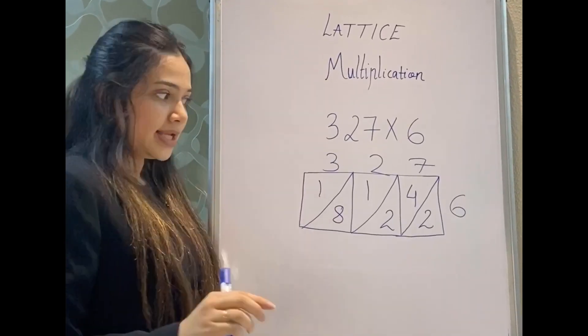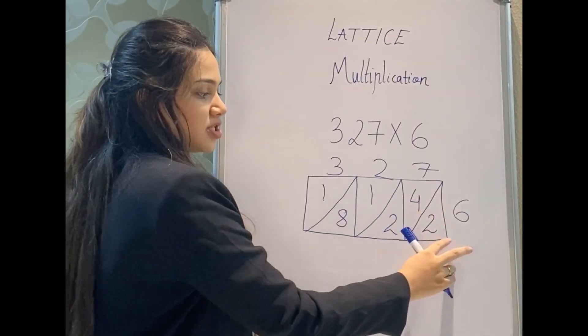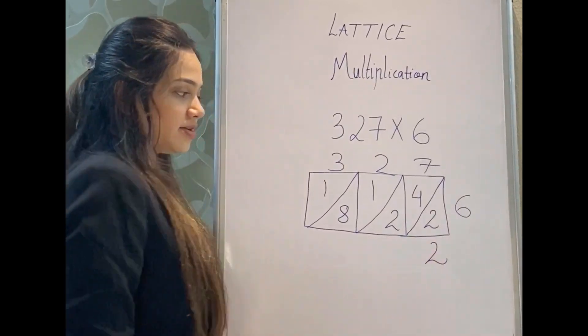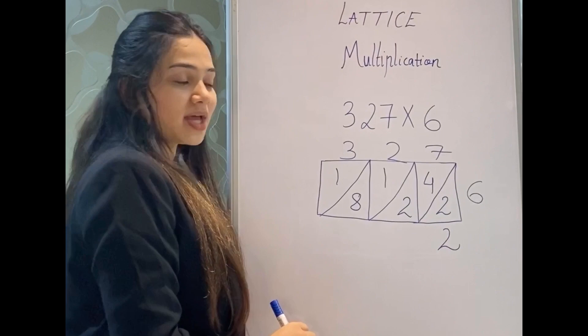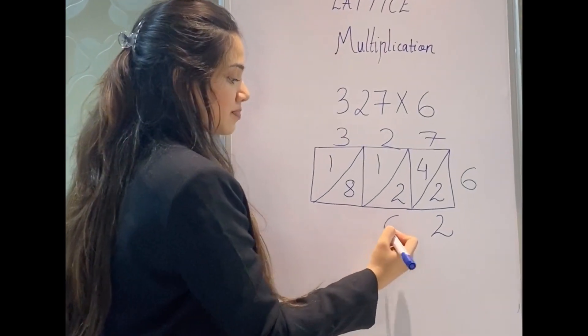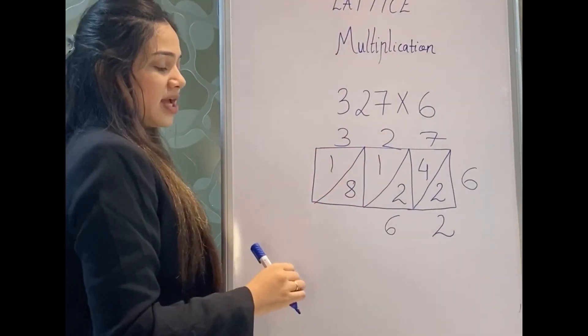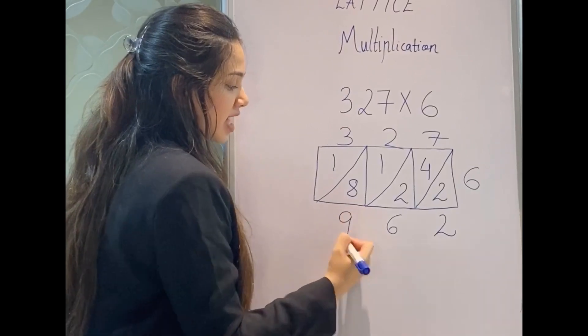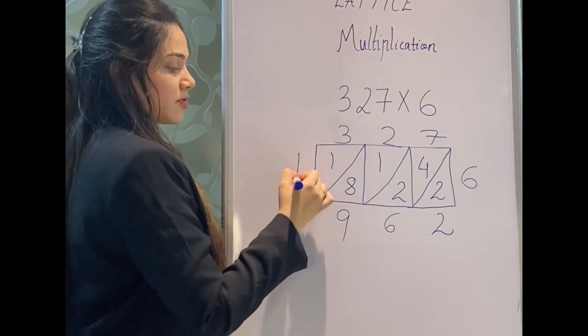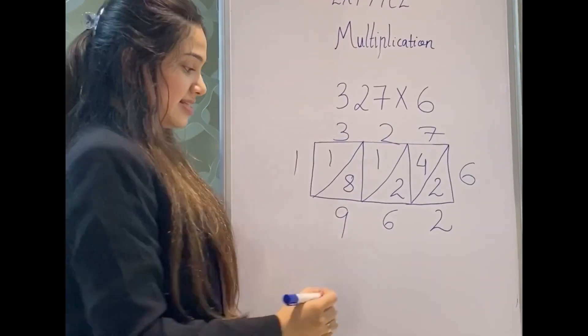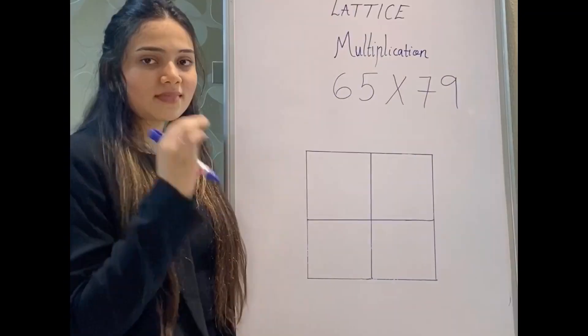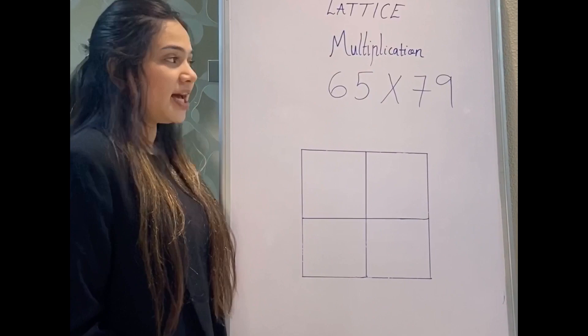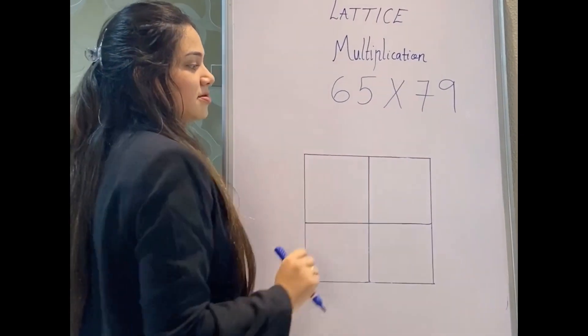But how will you add them? In this section I just have the number 2, so I'll write 2 over here. I have 4 + 2, that is 6. Here I have 8 + 1, that gives me 9. And here, 1. So my answer is 1962.